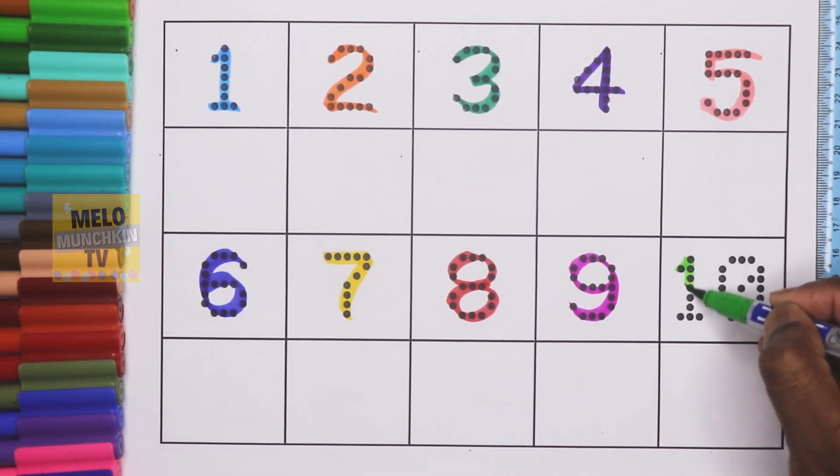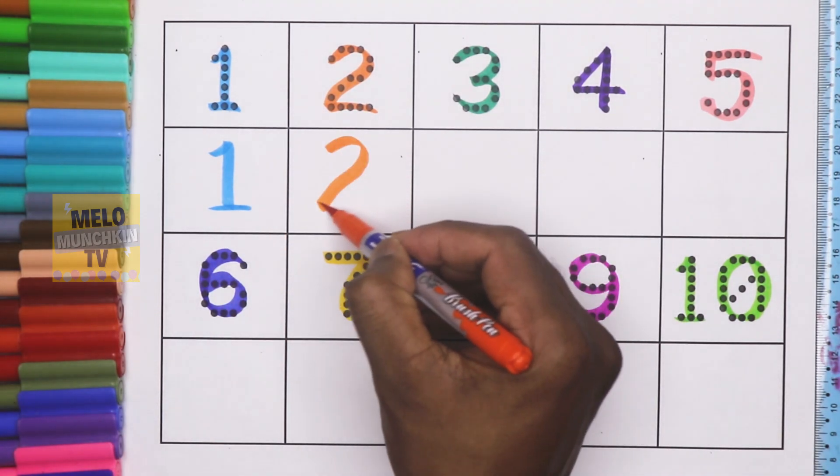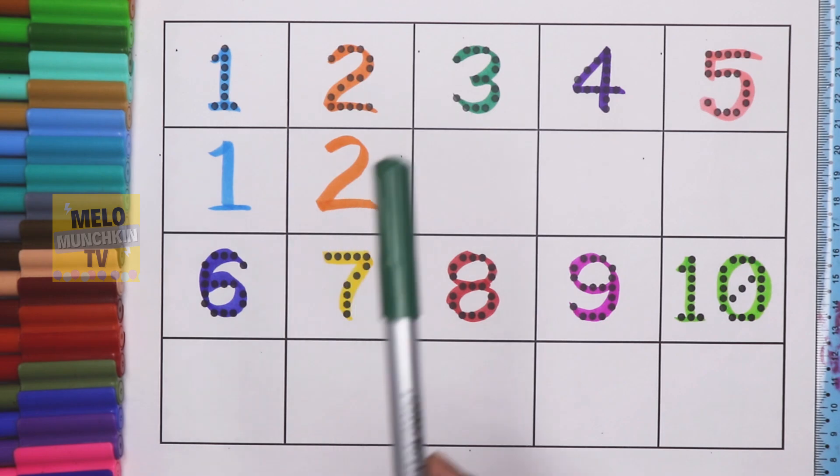Okay, so let's write once again the same colors I have used in my numbers. So this is blue 1, next orange color 2, next dark green color 3, purple color 4, light pink color 5.